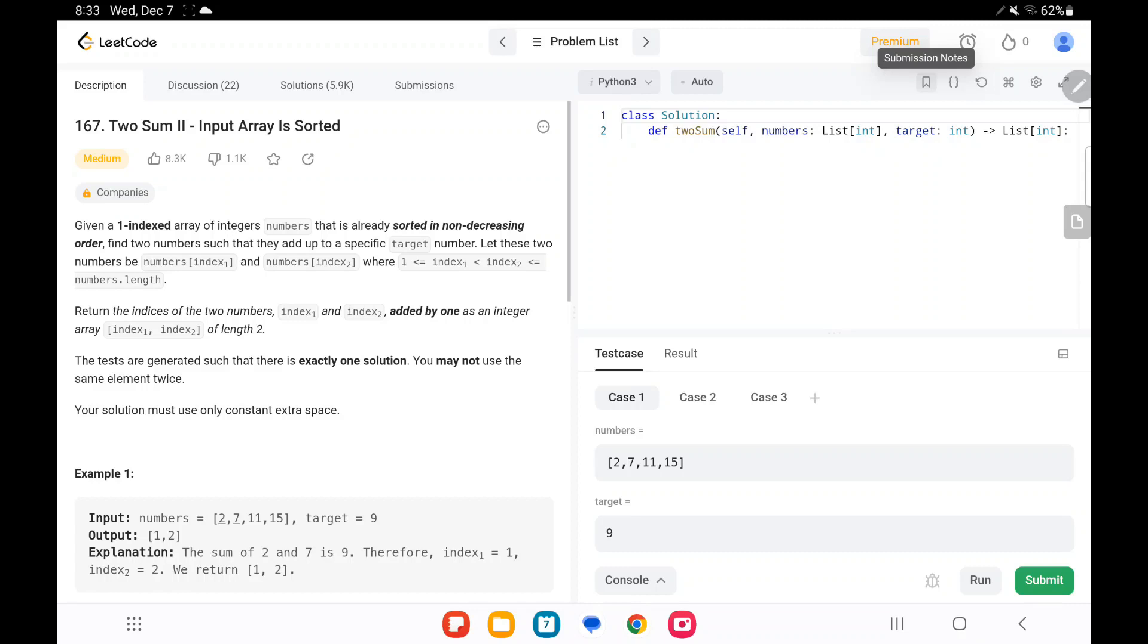So first we'll read the question and then we'll move to the solution. Given an input array and they are sorted in ascending order, we need to return the two numbers that sum to the target number and there is only one solution. We cannot use extra space, we have to do it within the given input itself, and we need to add one to the current index, the two indices that we are going to return.